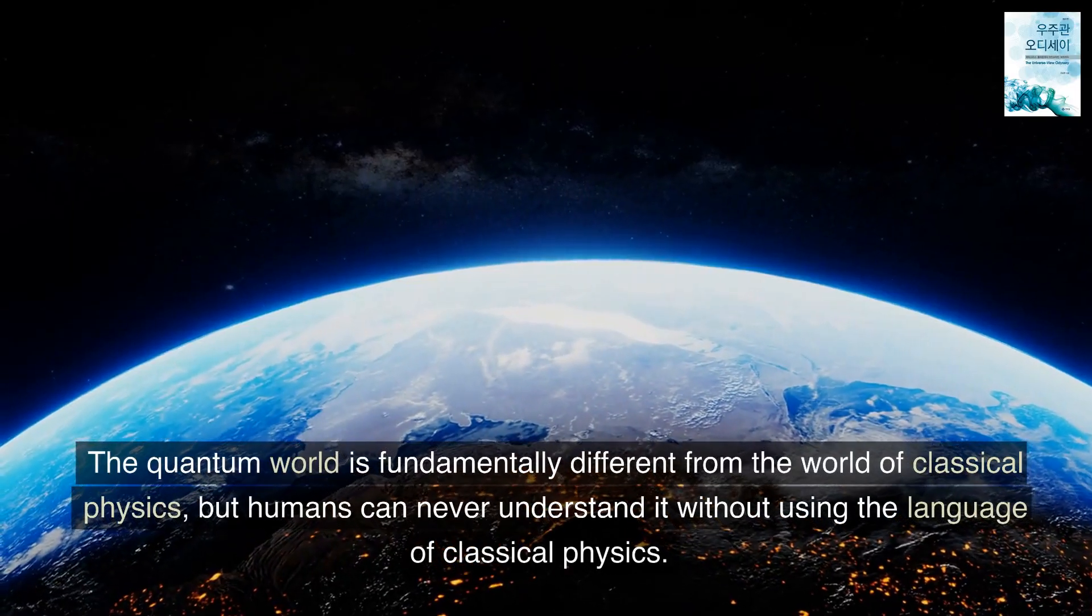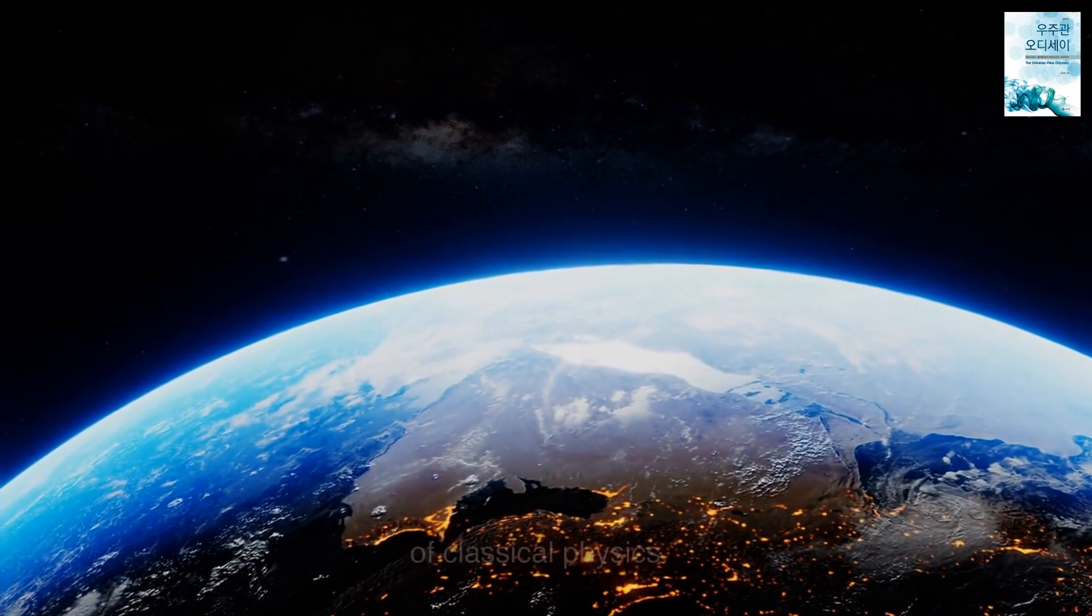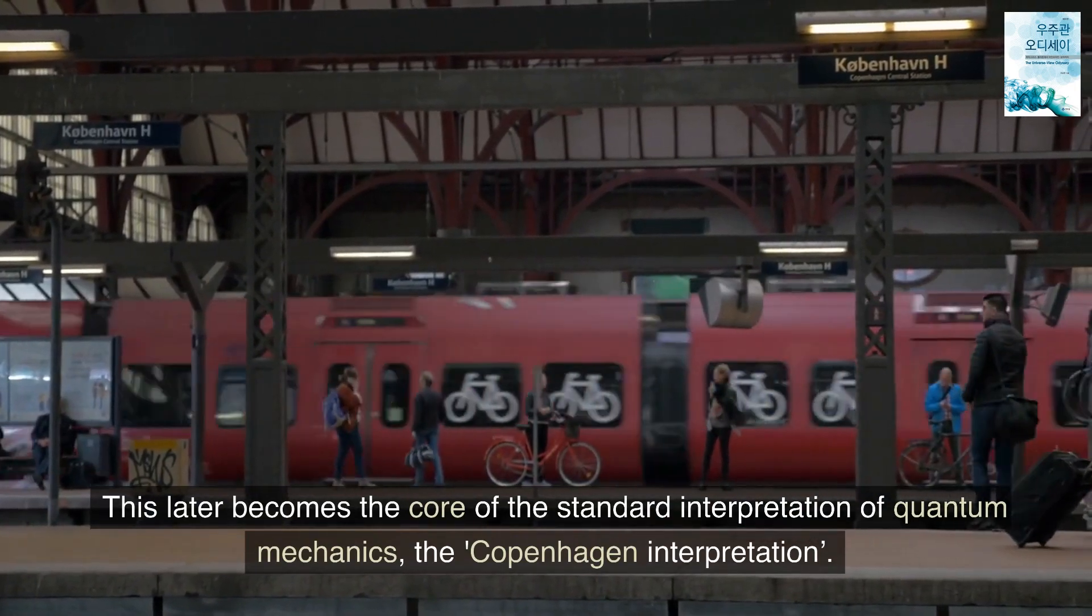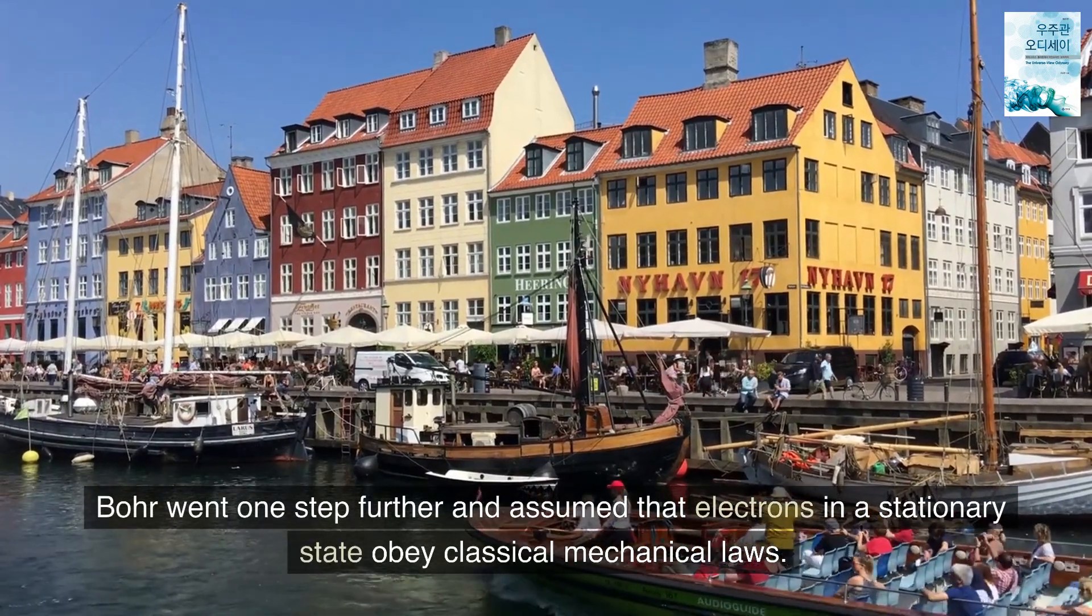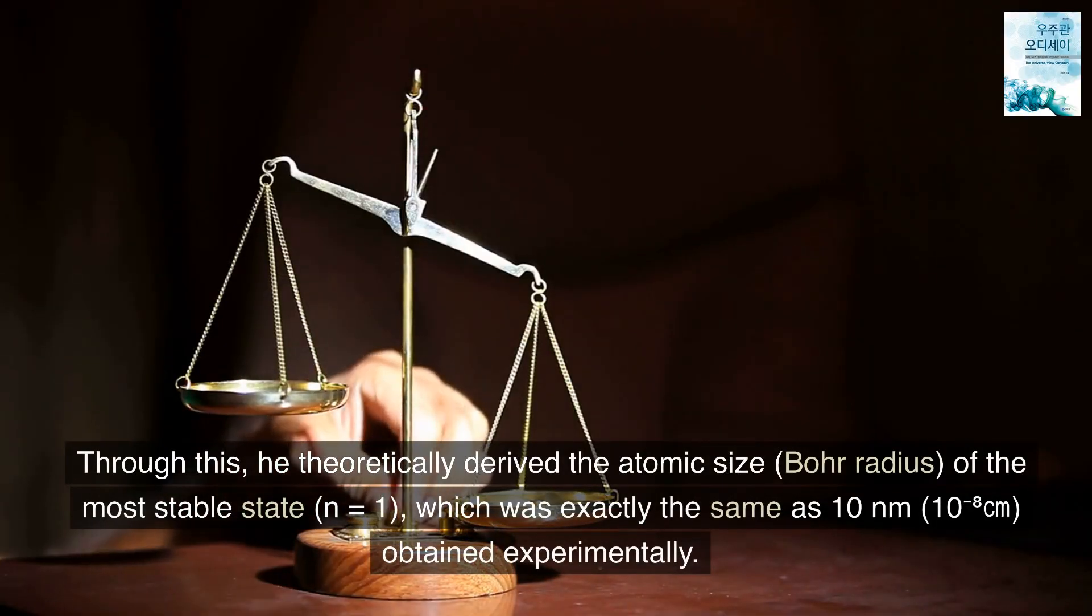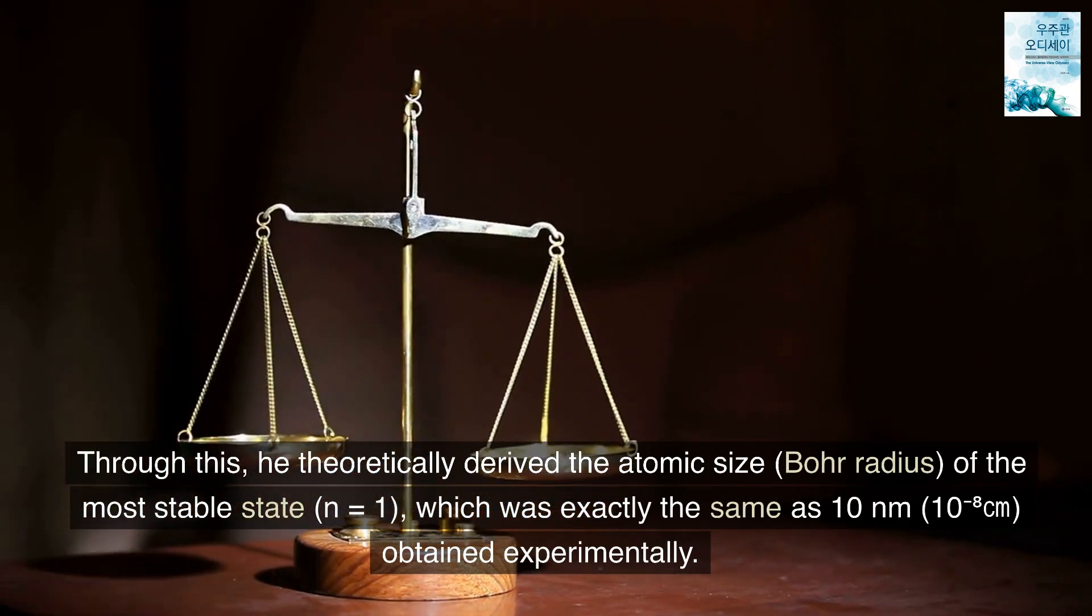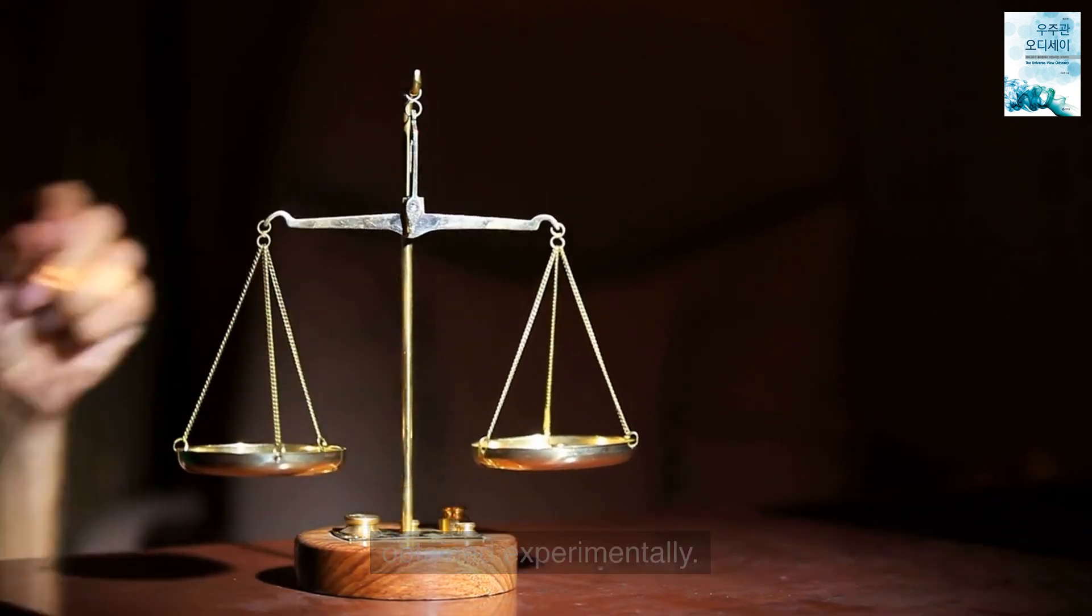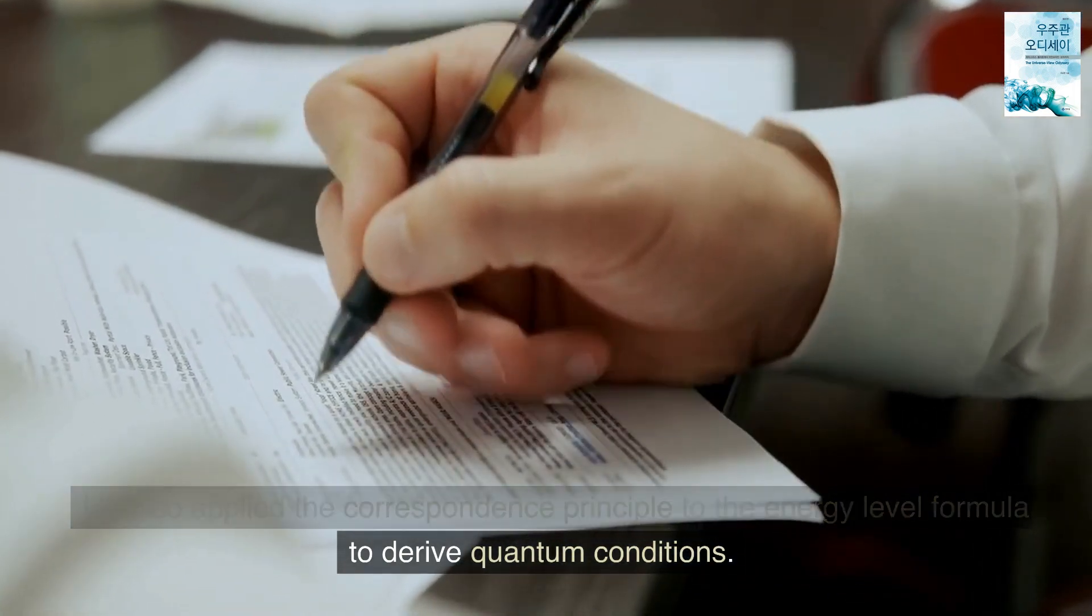Bohr eventually succeeded in expressing the phenomenon of atoms by borrowing the language of classical physics. The quantum world is fundamentally different from the world of classical physics, but humans can never understand it without using the language of classical physics. This later becomes the core of the standard interpretation of quantum mechanics, the Copenhagen interpretation. Bohr went one step further and assumed that electrons in a stationary state obey classical mechanical laws. Through this, he theoretically derived the atomic size, Bohr radius, of the most stable state, n equals 1, which was exactly the same as 10 nanometers, 10 to the power of -8 cm, obtained experimentally. He also applied the correspondence principle to the energy level formula to derive quantum conditions.